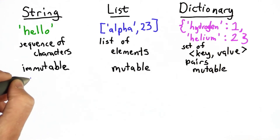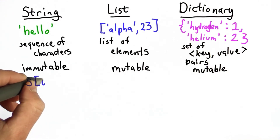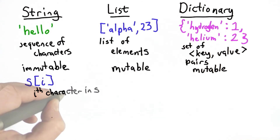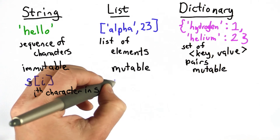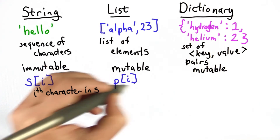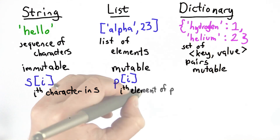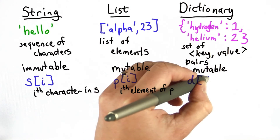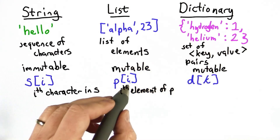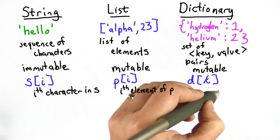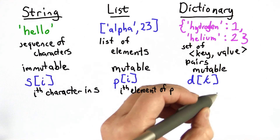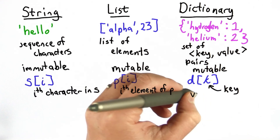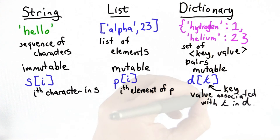We saw with strings, if s is a string, then we can do s[i], which gives us the i-th letter in the string. With lists, we can do something very similar — if p is a list, we can do p[i] to get the i-th element of the list. With dictionaries, it's a little bit different. The syntax is the same: we can do d[k], but with strings and lists the index was a number, whereas here k is whatever the key value is — a key in the dictionary. So d[k] gives us the value associated with that key.